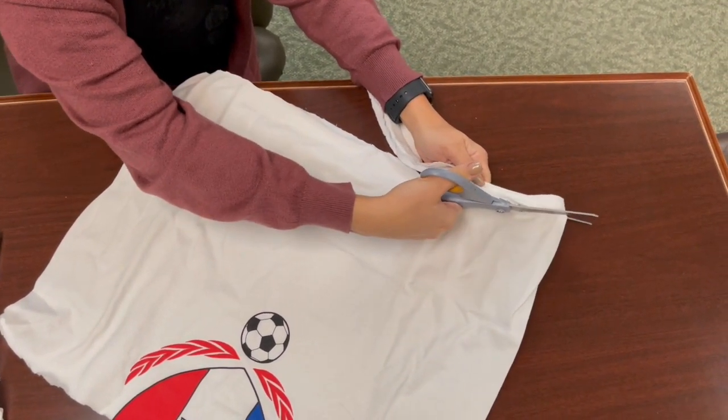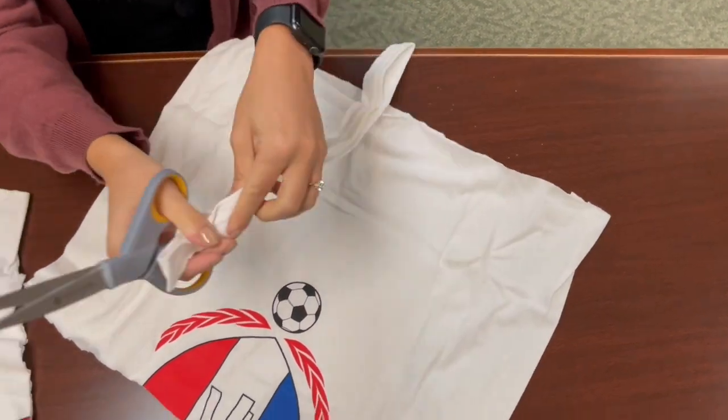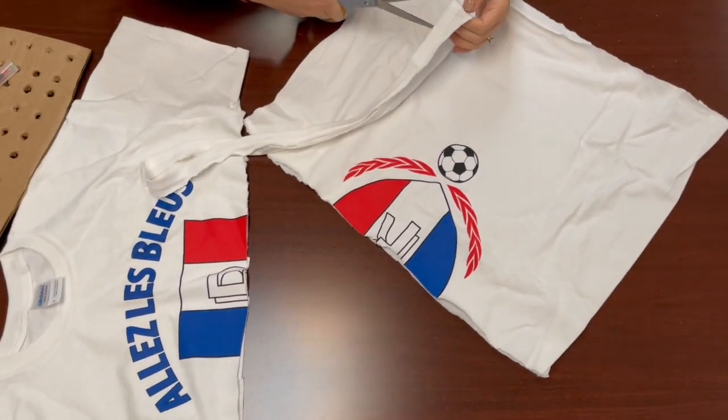Once you have the loops of t-shirt, you're going to take those loops and cut six inch strips.